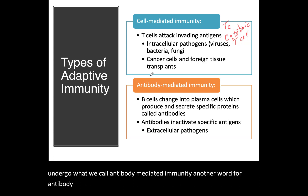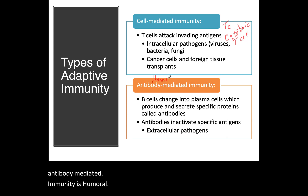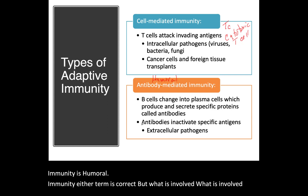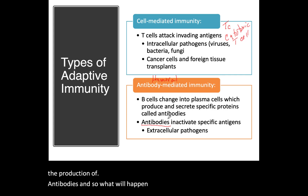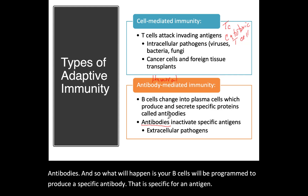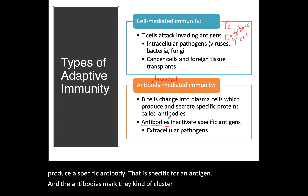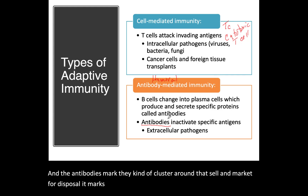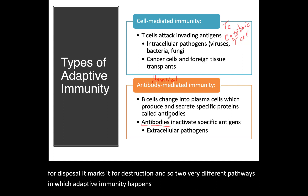Whereas T cells engage in hand-to-hand combat, B cells undergo antibody-mediated immunity — another term for this is humoral immunity. What's involved is the production of antibodies. B cells are programmed to produce a specific antibody for a specific antigen, and the antibodies cluster around that cell and mark it for destruction.